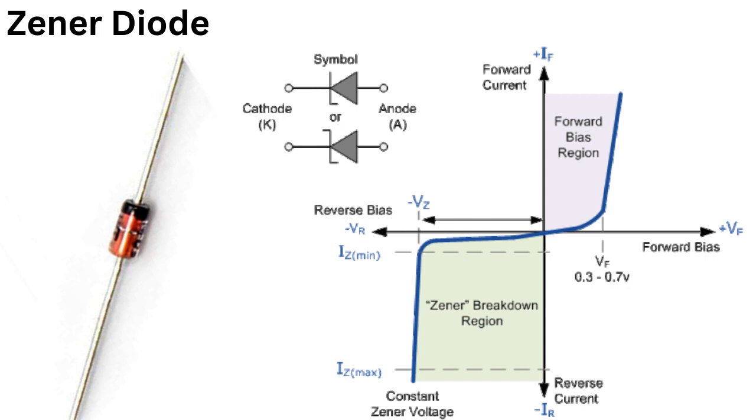This relationship can be described by the Zener voltage temperature coefficient, which is a value that represents the change in Zener voltage per degree Celsius of temperature change. This value is typically specified in the diode's datasheet, and it can be used to calculate the expected change in Zener voltage at different temperatures.